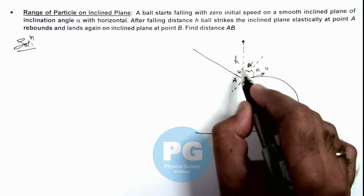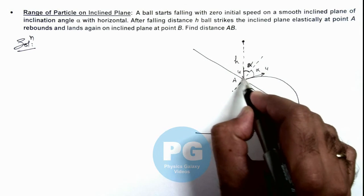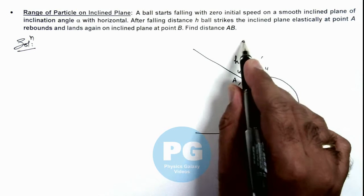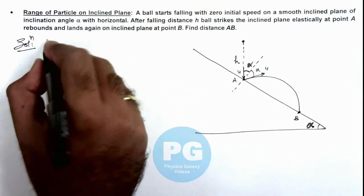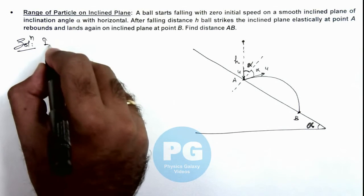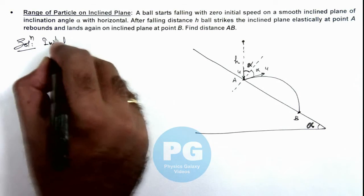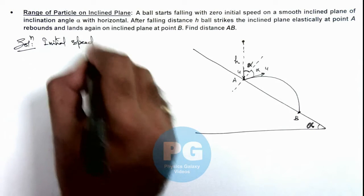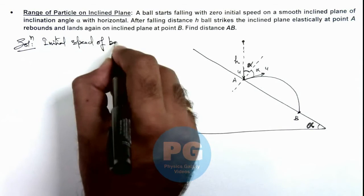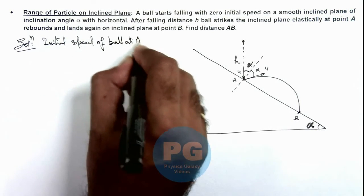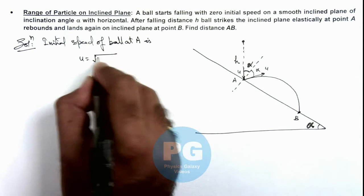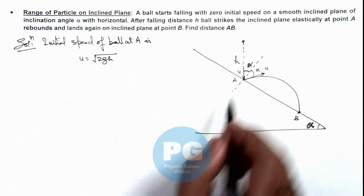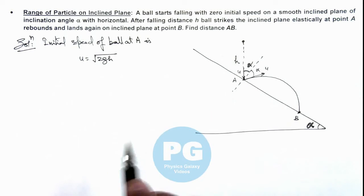Here, first we calculate the speed with which the ball will strike the plane. As it is falling a distance h before striking, we can directly write the initial speed of the ball at point A - this speed u - we can directly write as root 2gh, as it has been in free fall for a distance h.